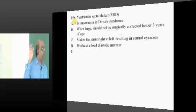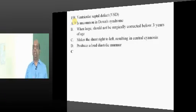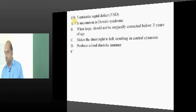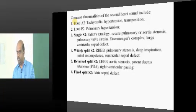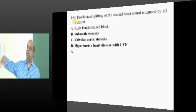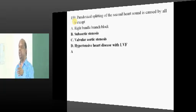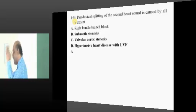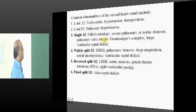In VSD, there is no cyanosis. Only when it shifts from left-to-right to right-to-left does cyanosis develop later. Regarding paradoxical splitting: normally the second heart sound is A2 then P2. In right bundle branch block, P2 occurs a little later — this causes widening of the split, not paradoxical. In left bundle branch block, A2 becomes so delayed that it occurs after P2, and that leads to paradoxical splitting.